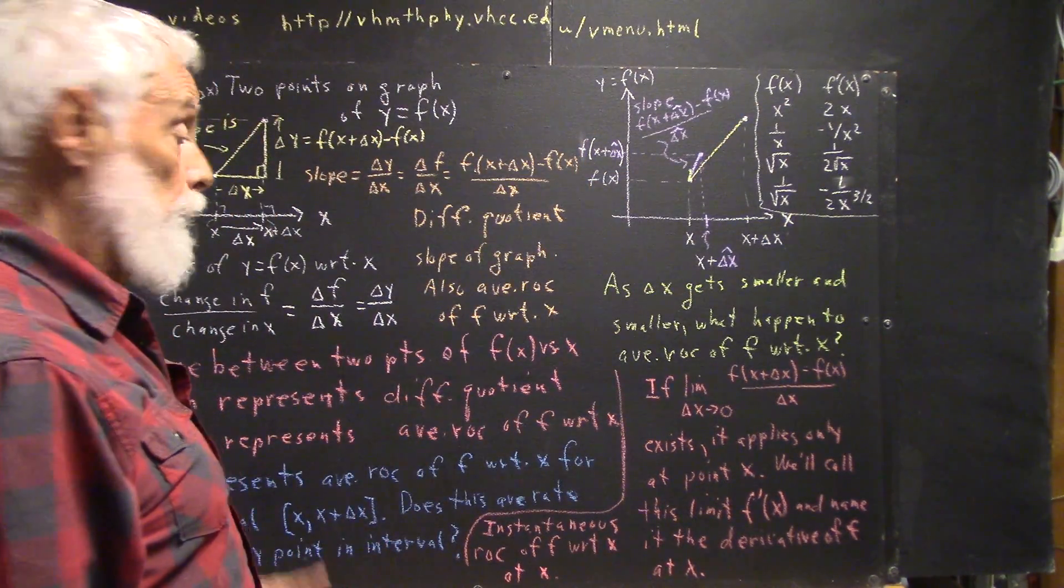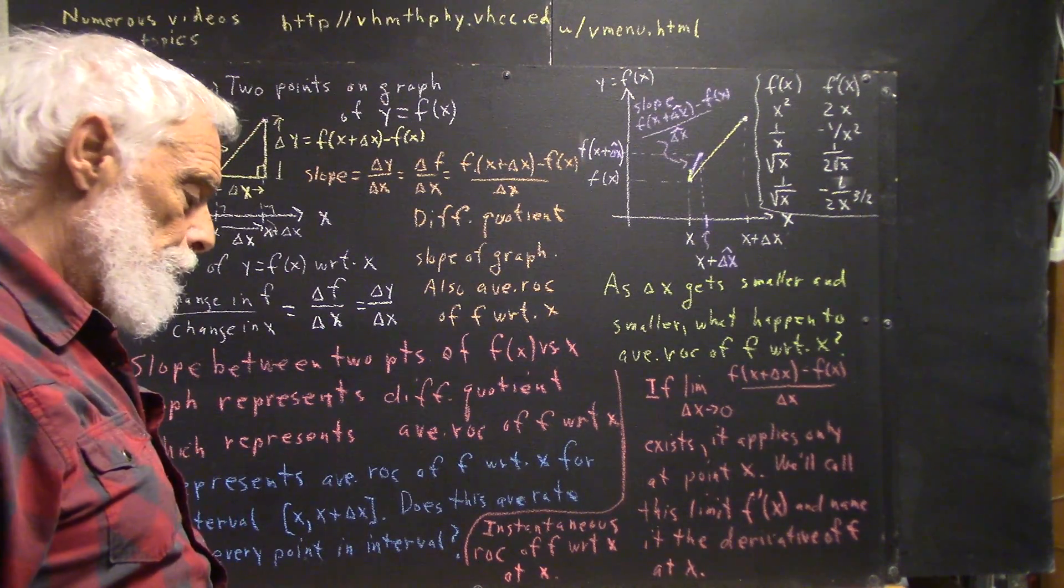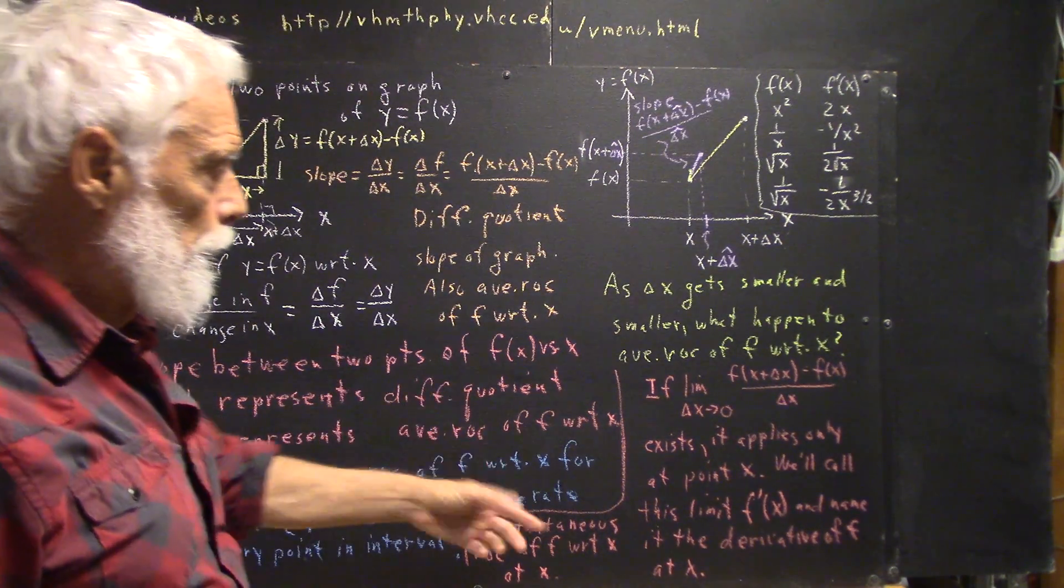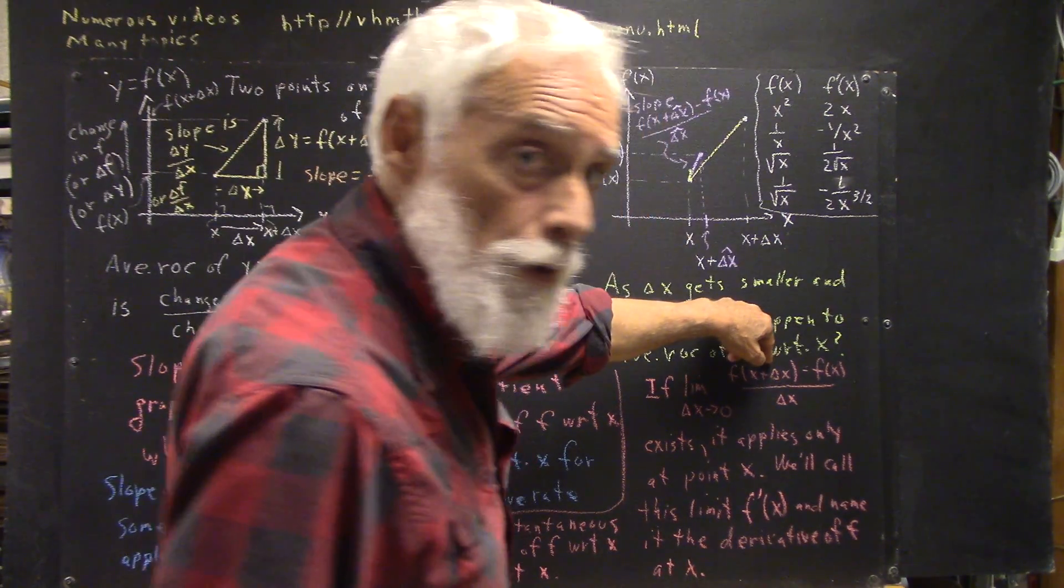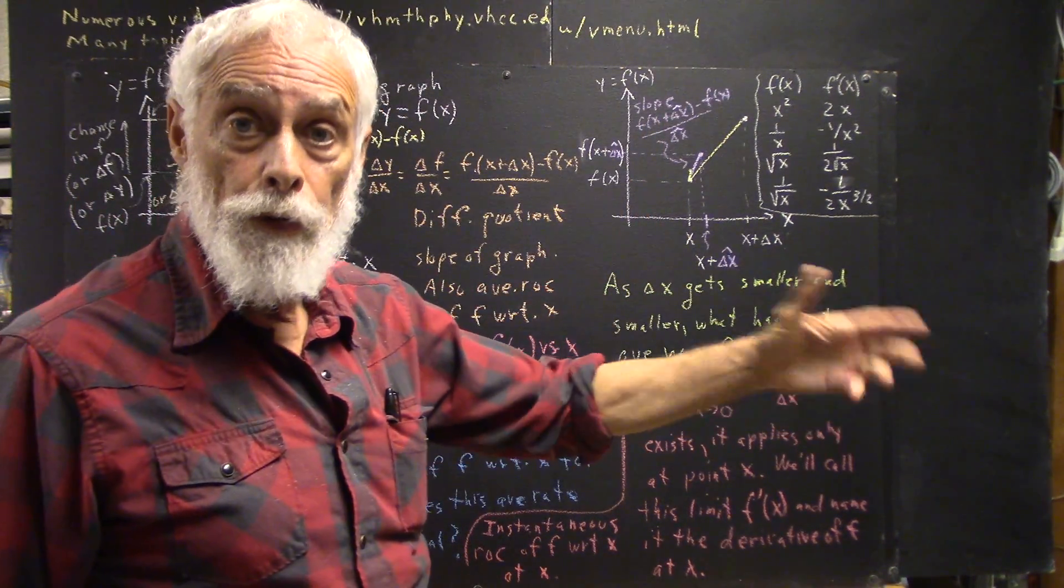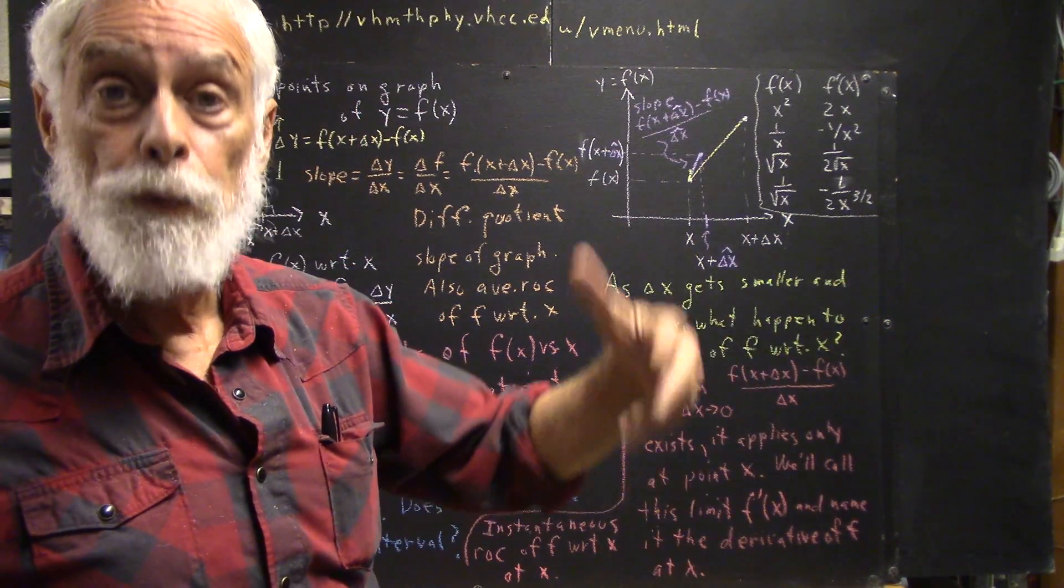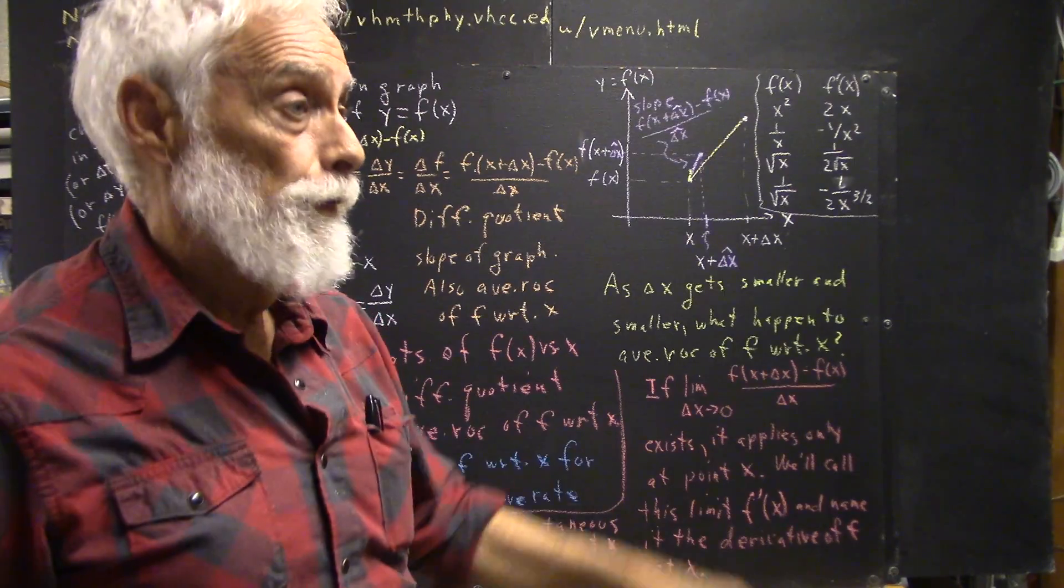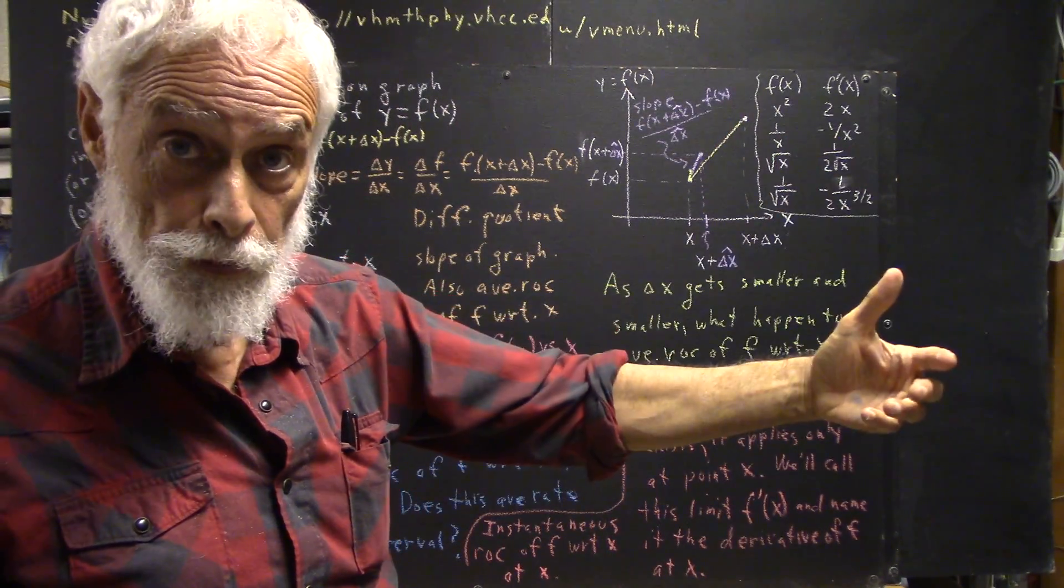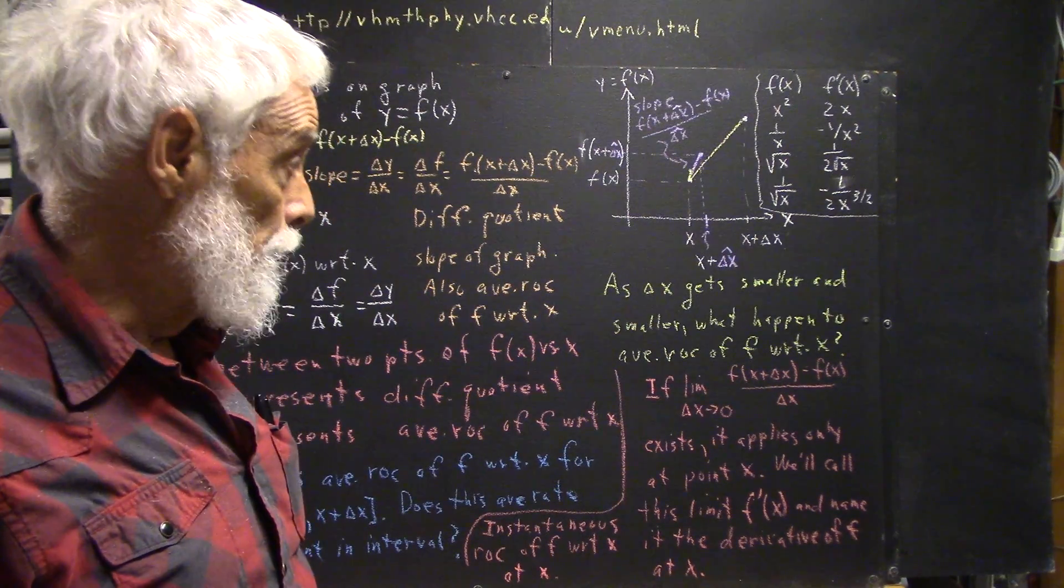If you're viewing these videos in the order they were made, then you've already seen how we evaluate this limit for the function f of x equals x squared, for the function f of x equals 1 over x, for the function f of x equals square root of x, for the function f of x equals 1 over the square root of x, and also for the function sine of x.